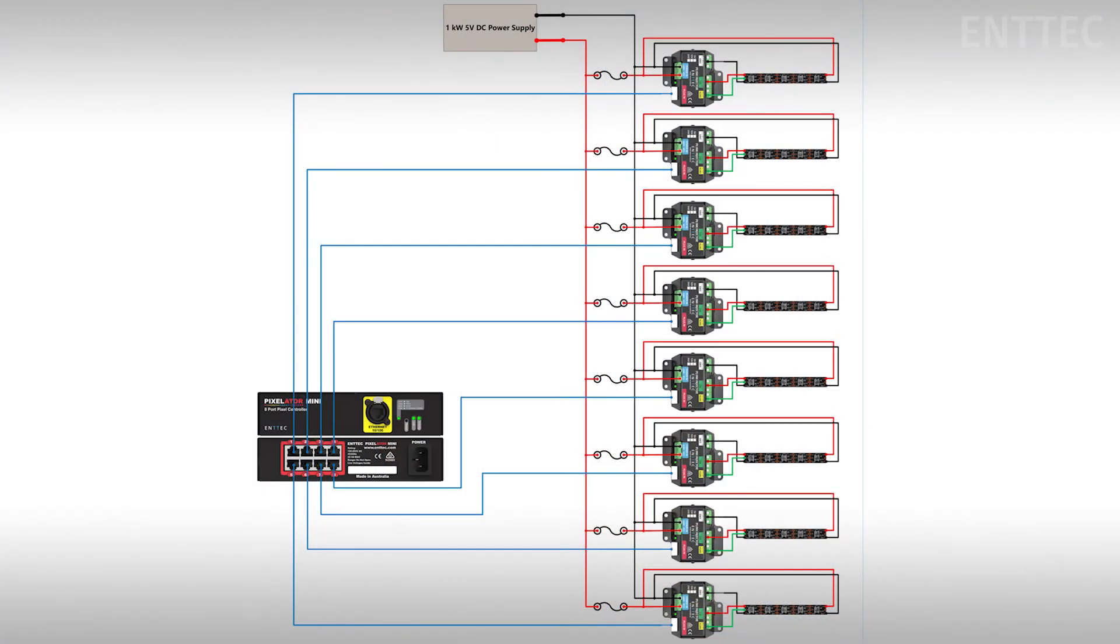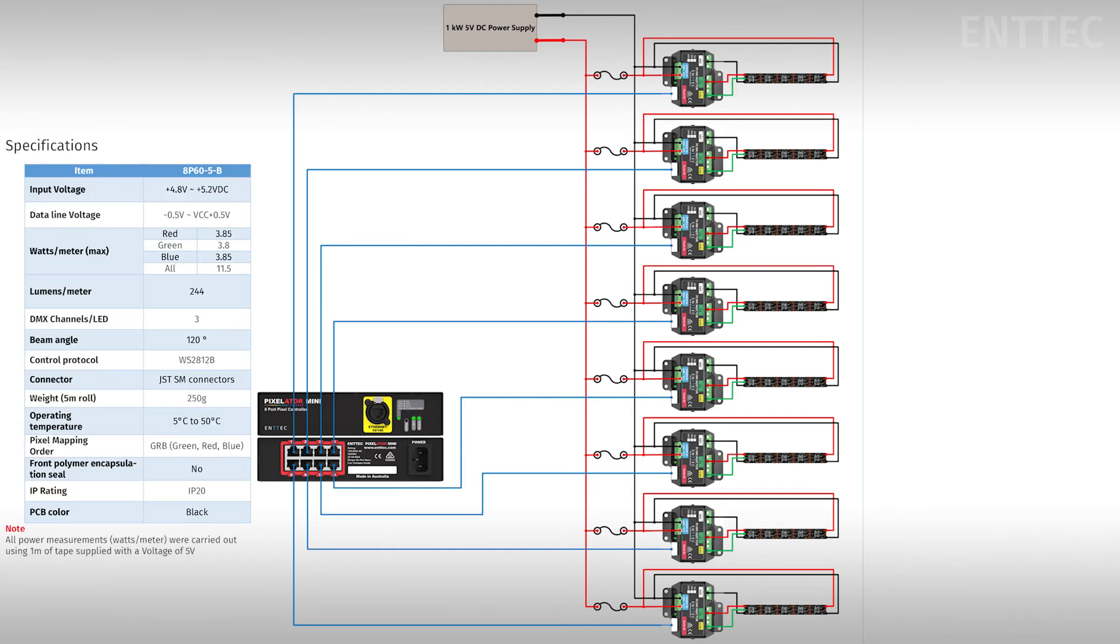Your fuse needs to be sized to meet the maximum power requirements of your LED tape. In this system, we're using the 8P60-5-B. Looking through its data sheet, we can see the max power consumption of this tape is 11.5 watts per meter.